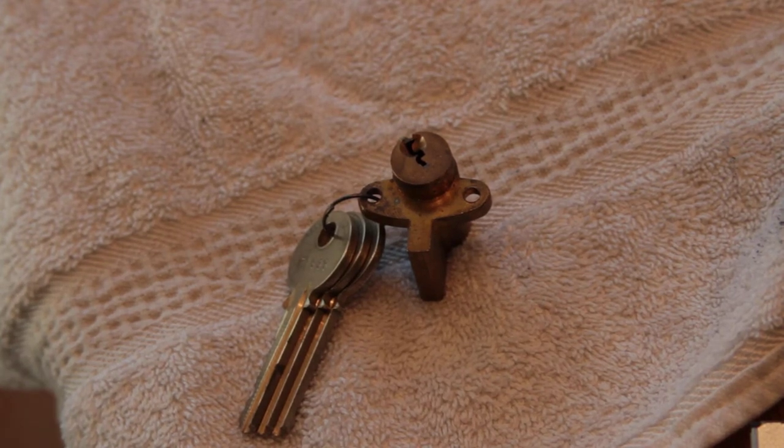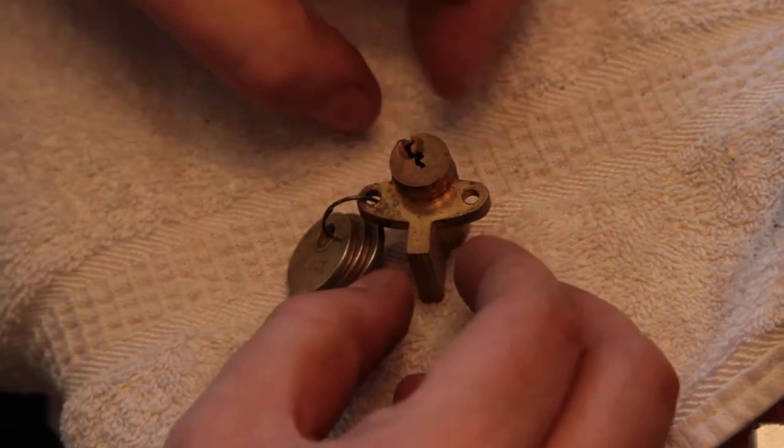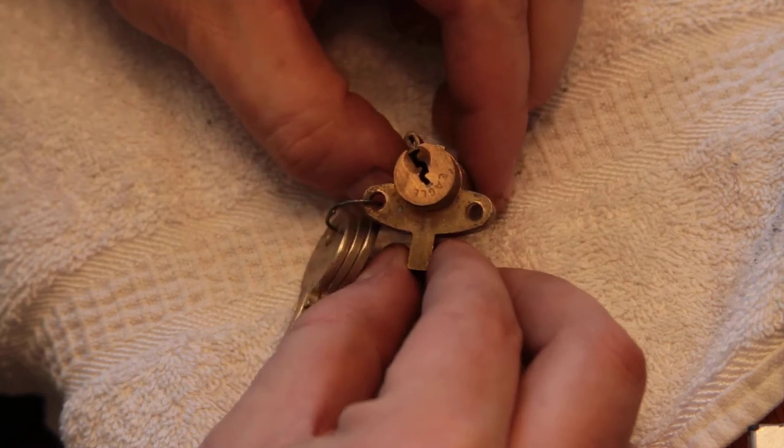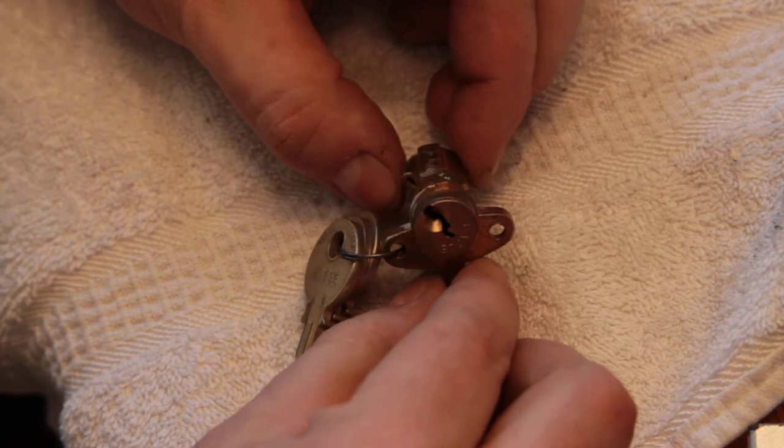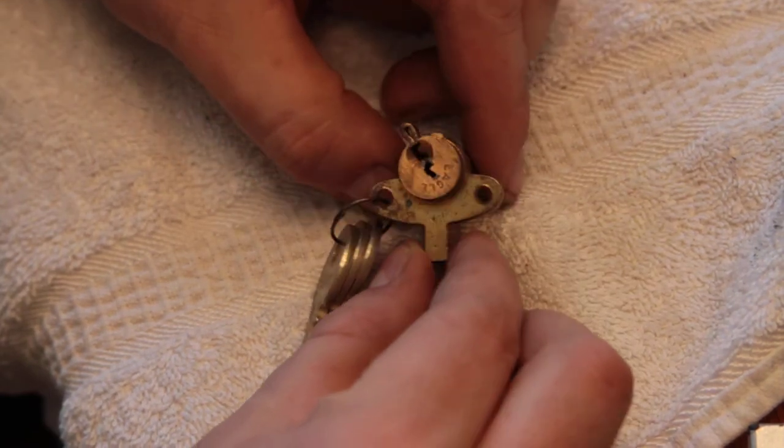This is also a mailbox lock that I got off of eBay, completely unrelated to the other ones. This one says Eagle. I think some of the other ones say Yale. It has a Yale keyway, came with keys, and I picked it open last night. I won't bother showing you that. It's a funny little lock.